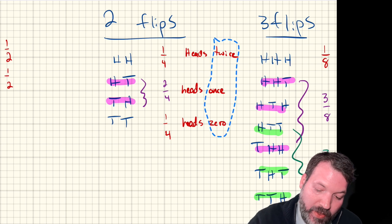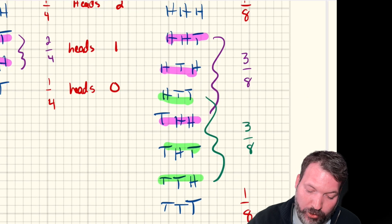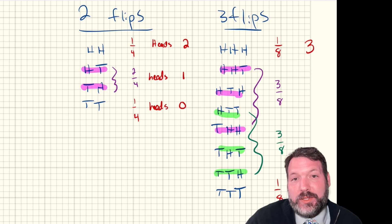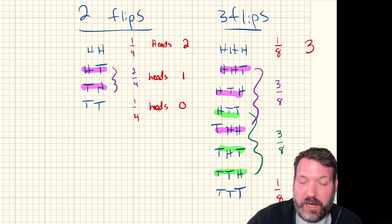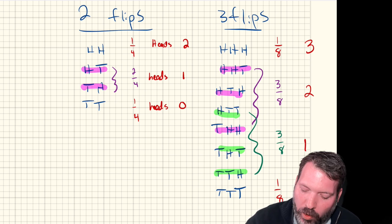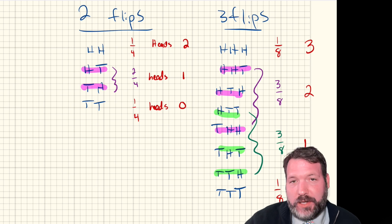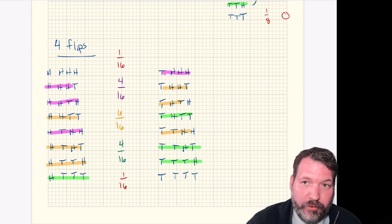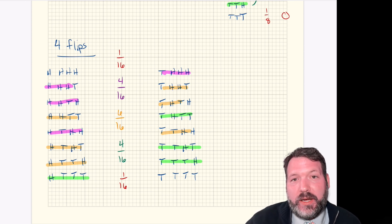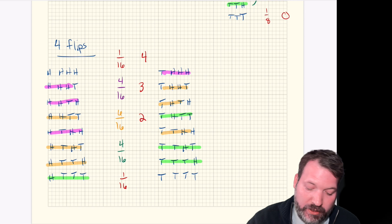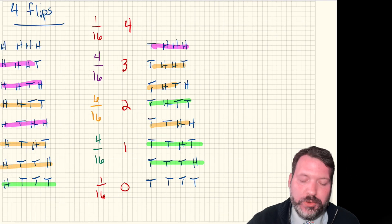For three flips we can aggregate similarly: heads all three times happens one-eighth of the time; two heads out of three happens three-eighths of the time; heads just once also three-eighths; and heads not at all one-eighth. For four flips: heads all four — one-sixteenth; heads three times — four-sixteenths; heads twice — six-sixteenths; heads once — four-sixteenths; heads zero times — one-sixteenth.